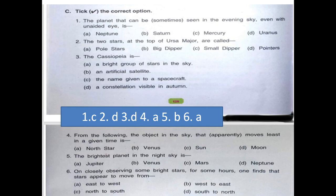Second one, the two stars at the top of Ursa major are called Pole star, bigger, dipper, small dipper, pointer. And our answer is D, pointer.